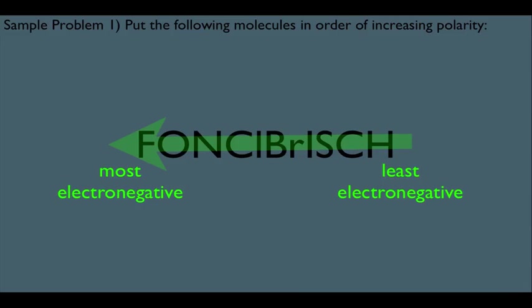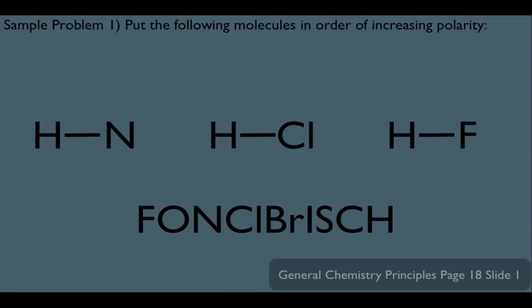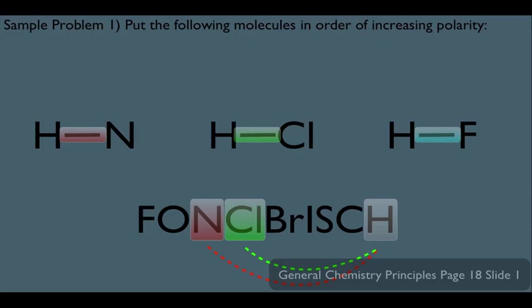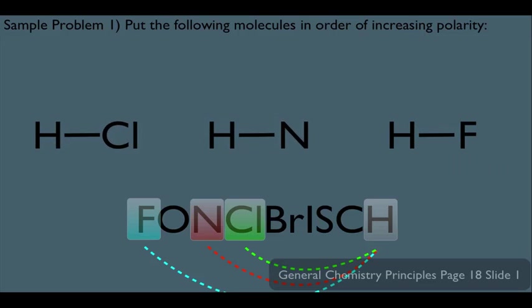Fonkelbrich is very handy in organic chemistry because these are the elements most often used in organic chemistry. For the H-N bond, N and H are this far apart on the Fonkelbrich, representing their electronegativity difference. Comparing that to the H-Cl bond, they would be this far apart — since H-N is further apart, the H-N bond is more polar than the H-Cl bond. For the H-F bond, they're the furthest apart on the chart, so H-F is the most polar bond. Putting these in order of increasing polarity: H-Cl is lowest, then H-N, then H-F is highest.